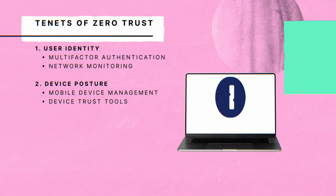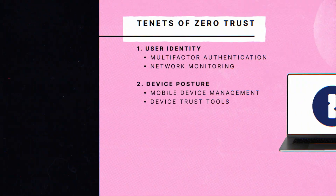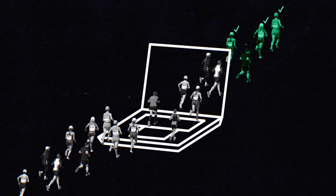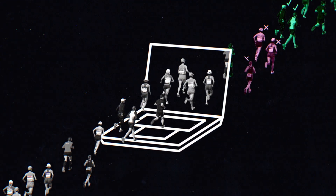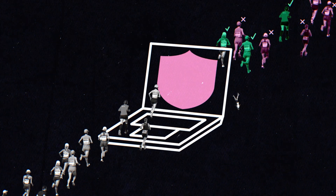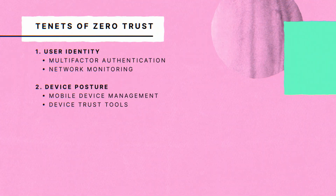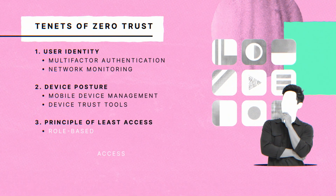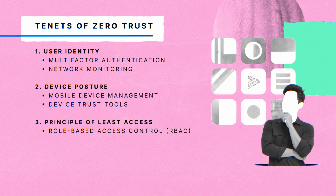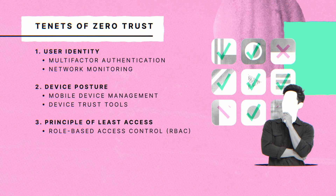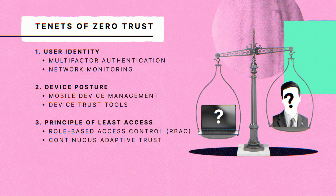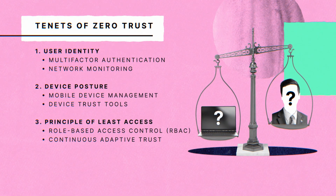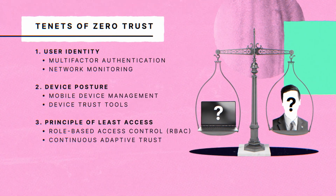Device trust tools like 1Password Extended Access Management help solve those problems. Finally, even with tools that solve for user authentication and device posture, hackers sometimes get in. At that point, the company's goal is to limit the damage an attacker can do. So the final tenet of Zero Trust is the principle of least access. One way of solving that is role-based access control, only letting Joe access the resources he needs to do his job. Another is Continuous Adaptive Trust, in which the company decides what Joe can do based on how confident they are about his identity and device posture.